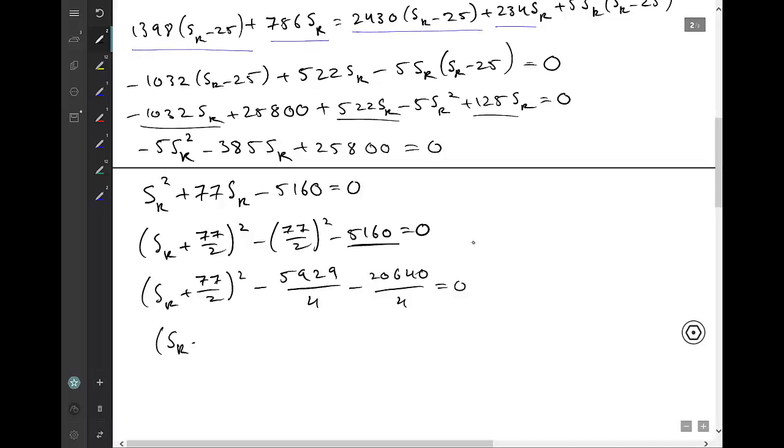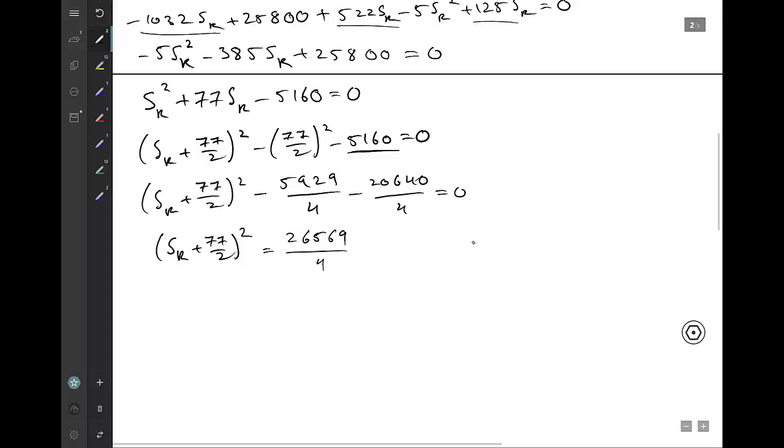Take the two numbers to the other side so I end up with 26569 on 4. Take the square root of both sides so we get SR plus 77 on 2 equals square root of 26569 on 2, remembering that it's plus minus.